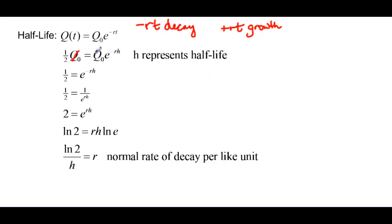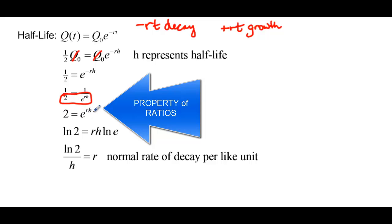So if we simplify that, we can divide off the Q₀, so we have 1/2 is equal to e to the negative rh. And if we take the negative exponent, we could write it as 1 over e to the rh, so 1/2 is equal to e to the rh. Or we could really kind of just look at this part down here then. Since they're both in the denominator, we could say that 2 is equal to e to the rh.